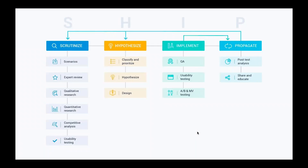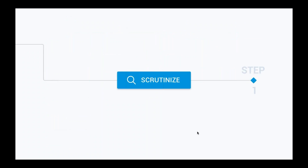This is how the process works — we use the acronym SHIP: Scrutinize, Hypothesize, Implement, Propagate. It also comes from shipping software, where you're constantly updating and shipping new releases. Let's go through how it works. The very first phase is what we call the Scrutinize phase.